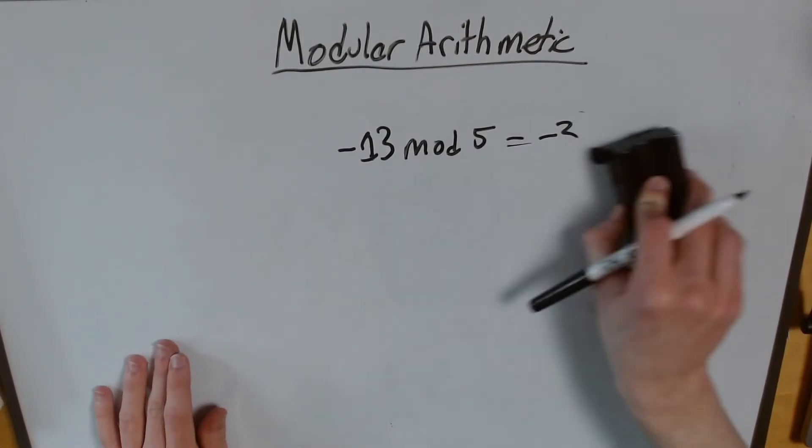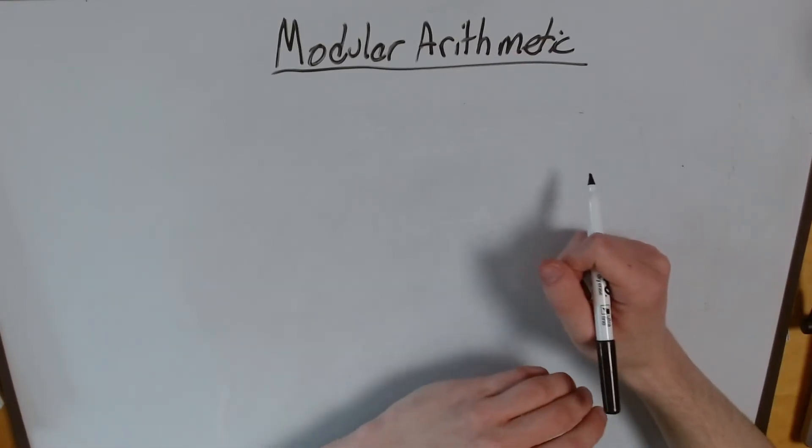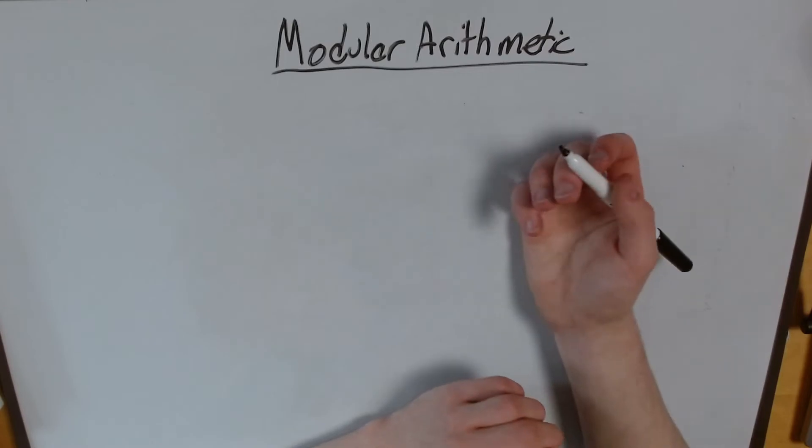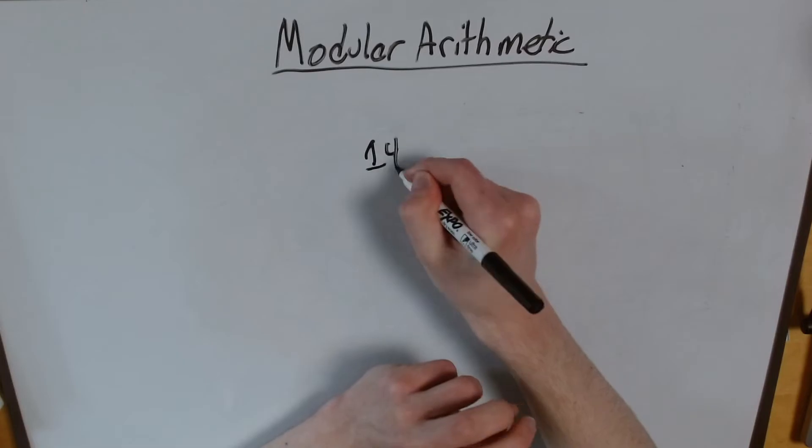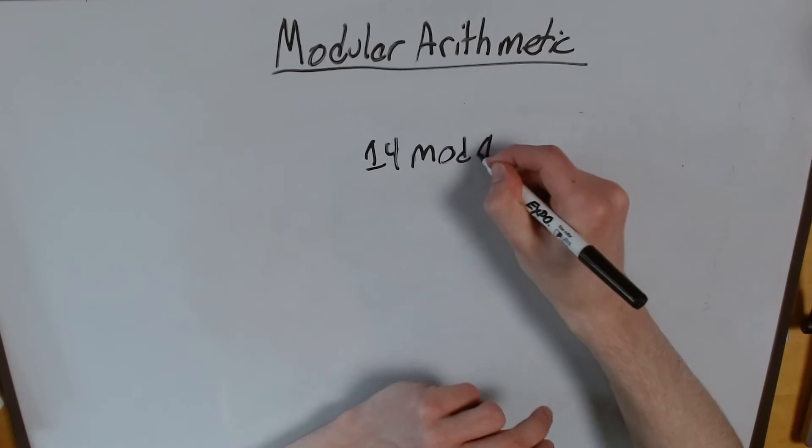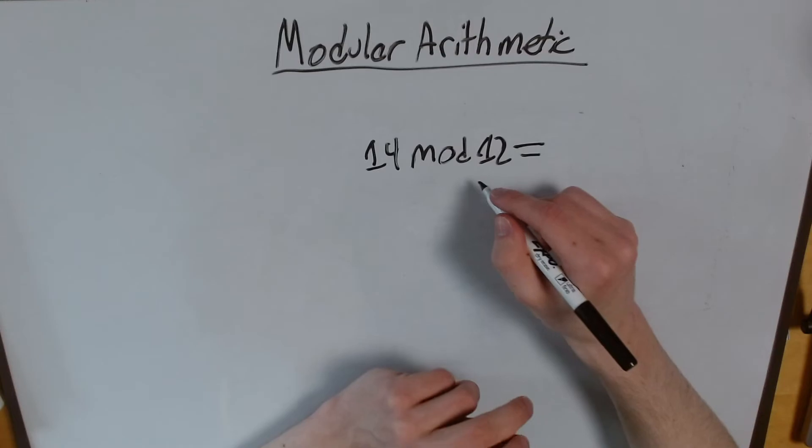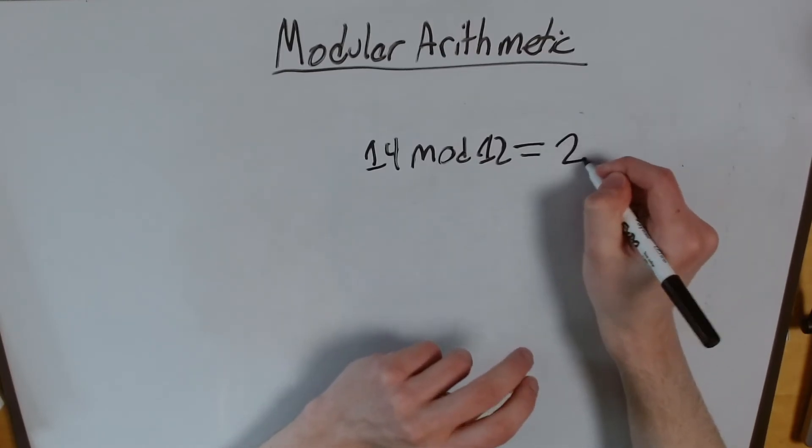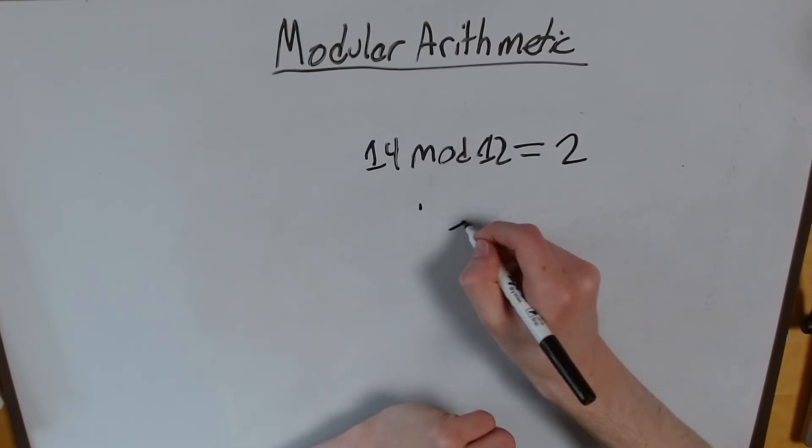A great example of where modular arithmetic comes in handy is dealing with clocks. So you're looking at your watch and it said it's been 14 hours since something. Well, there's no such thing as 14 o'clock. So what is the time? Well, what we're going to do is use modular arithmetic using 12, because there are 12 hours in a clock cycle to get our answer. And 14 is 2 greater than the nearest multiple of 12, which is just 12, so our answer is 2. So 14 o'clock, if I started at 12, would end me back up at 2.